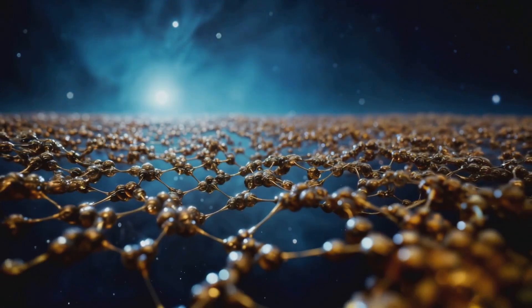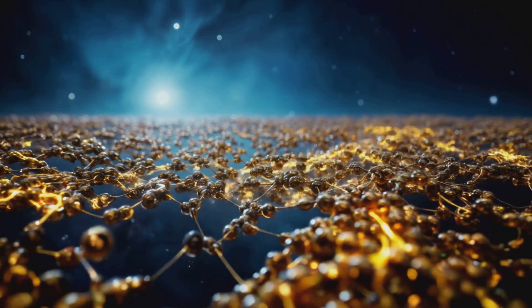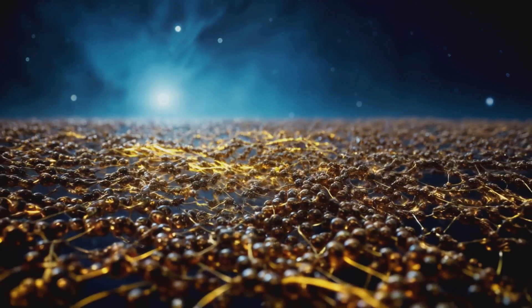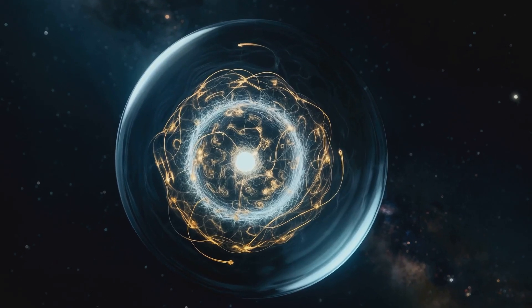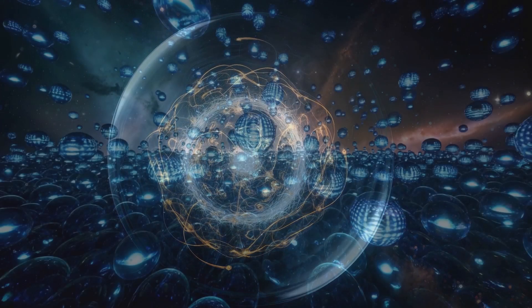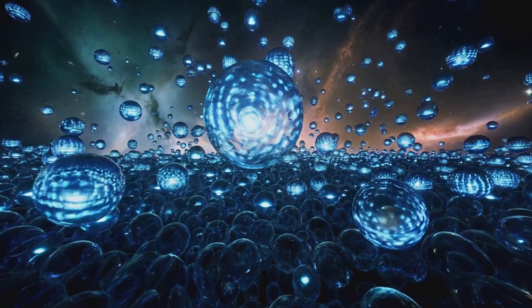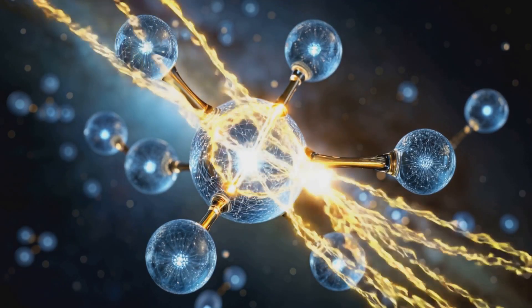Each cubit is a spinning event horizon, like the surface of a black hole but scaled down to the tiniest possible size. Each one carries a fragment of reality, a single glowing note in the grand symphony of existence. As they spin and align, they form the structure of space and time.